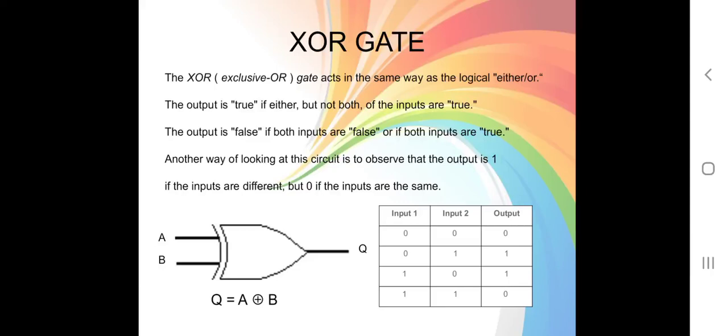Good day everyone. XOR gate. XOR, or exclusive OR gate, acts in the same way as the logical 'either or'. The output is true if either but not both of the inputs are true. The output is false if both inputs are false, or if both inputs are true.